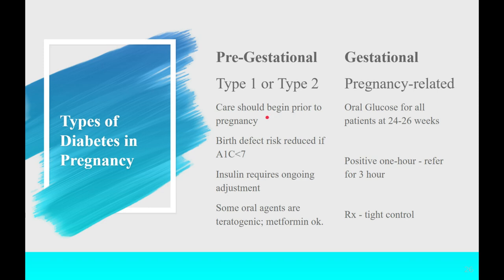Ideally, care begins prior to pregnancy. Any diabetic woman who is not pregnant should be asked by her provider about plans for pregnancy. It should be part of the diabetic care they give. If she's not planning to become pregnant, she should be referred for contraception. If she is planning to become pregnant, she should be referred for preconception counseling and should get her A1C under seven to reduce the risk of birth defects to what the general population experiences.